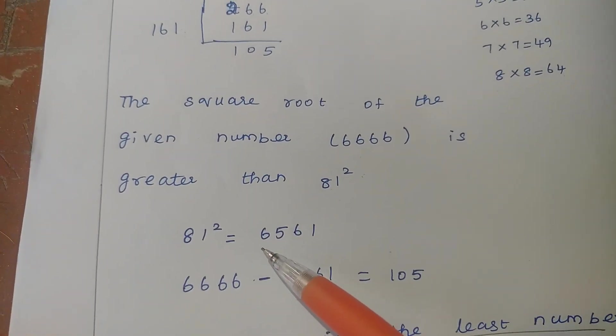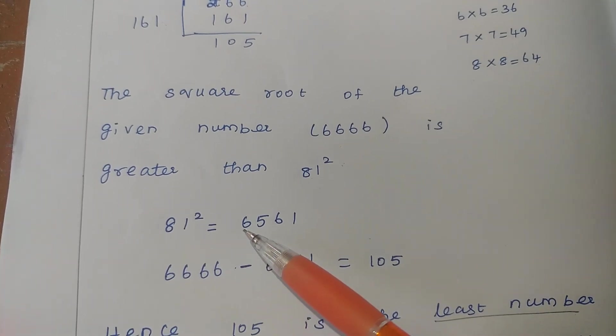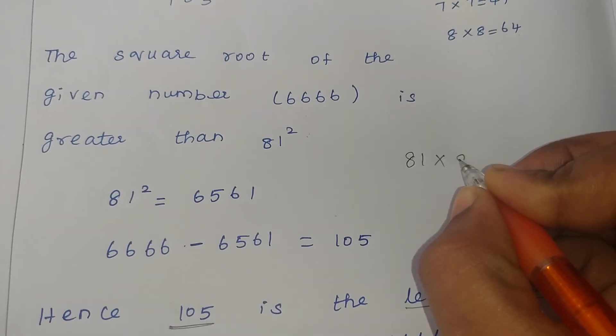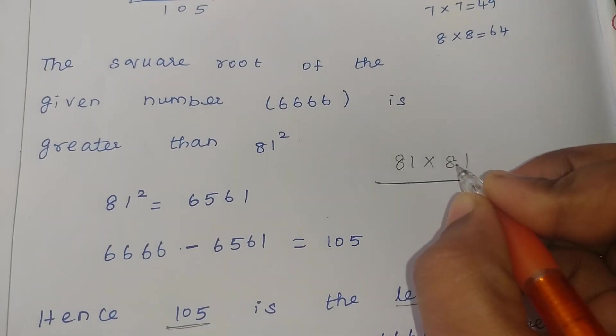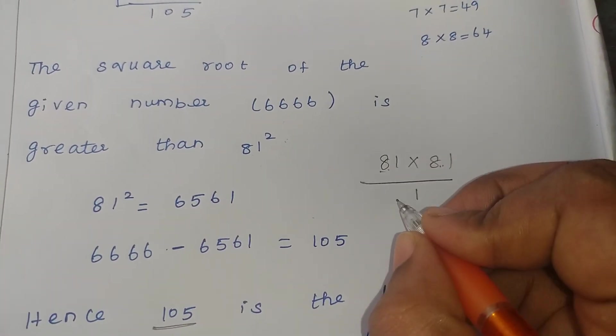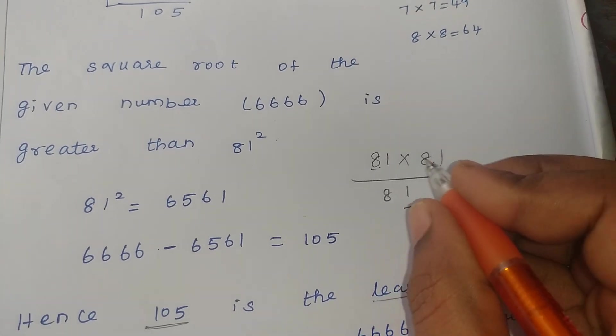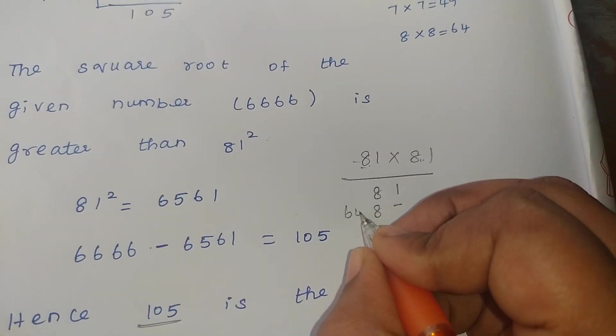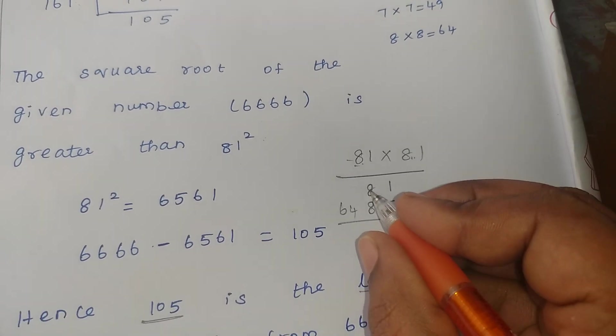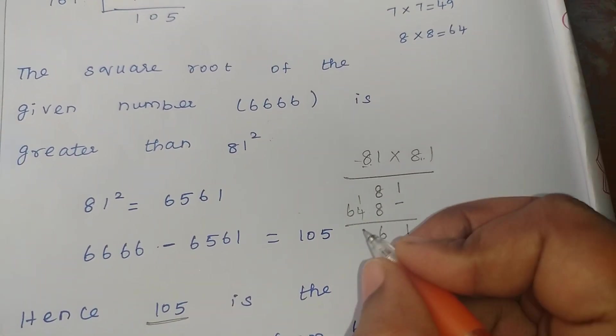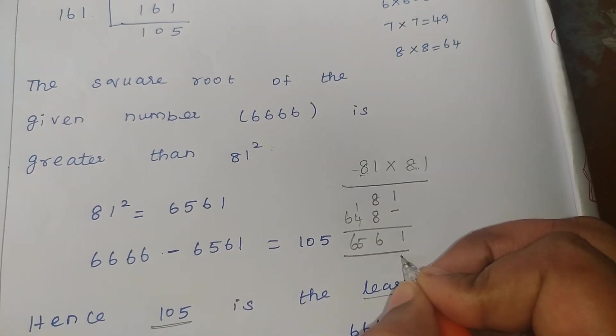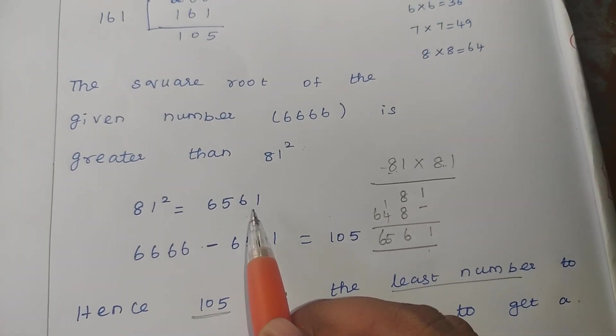So 81 square is what? I want to multiply 81 into 81. I will multiply and see here. 81 into 81. 1 1s are 1, 8 1s are 8. Clear? Next, 8 1s are 8, 8 8s are 64. Now 1, 8 plus 8, 16. 4 plus 1, 5. Yes, 6. 81 into 81, what we are getting? 6561.